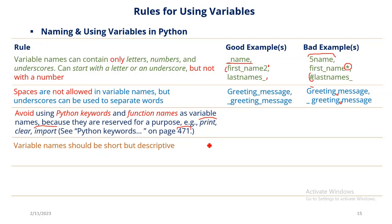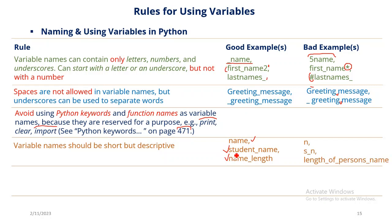As an advice, variable names should be short but descriptive. Good examples: 'name' makes meaning, 'student_name' makes meaning, 'name_length' makes meaning. Bad examples: 'n', 'sn', 'length_of_persons_names' — even though these bad examples will not flag errors in your program, they are not descriptive of the information you are trying to store. It is like having containers in your garage that you cannot differentiate between diesel, petrol, and kerosene — it can result in a dangerous situation. Avoid them.